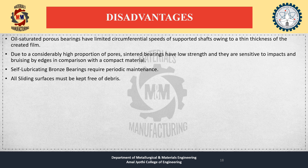Disadvantages of self-lubricating bearings: All saturated porous bearings have limited circumferential speed of the supported shaft owing to the thin thickness of the created film. Due to a considerably high proportion of pores, sintered bearings have low strength and are sensitive to impacts and bruising by edges in comparison with compact material. Self-lubricating bronze bearings require periodic maintenance and all sliding surfaces must be kept free of debris.